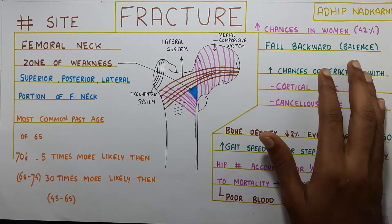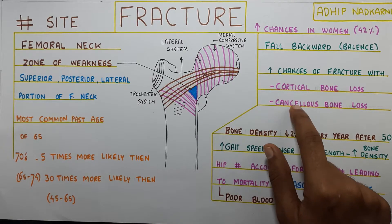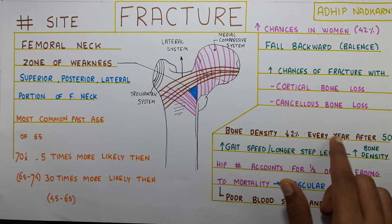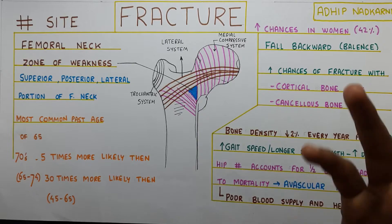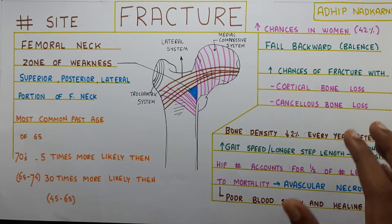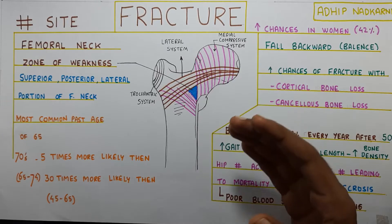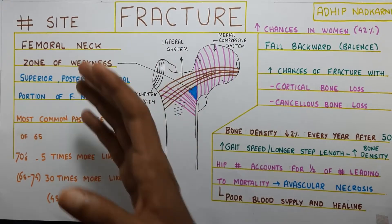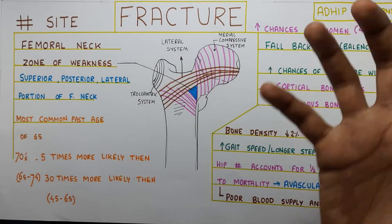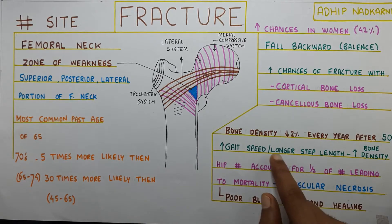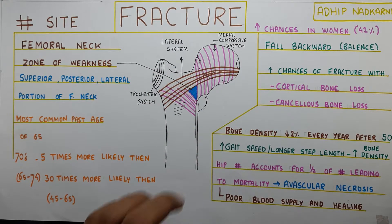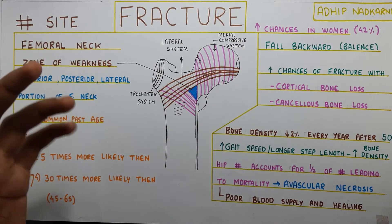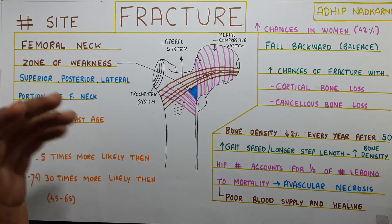There are high chances of fracture with loss of cortical and cancellous bone, and this bone loss can be seen with age. Bone density reduces by 2% every year after the age of 50, so as you start aging, bone loss increases and the chances of fracture rise — and in women this is even more magnified. Additionally, gait speed and longer step length can be correlated to bone density; someone with a greater walking speed and higher step length has better bone density compared to someone with lesser speed.